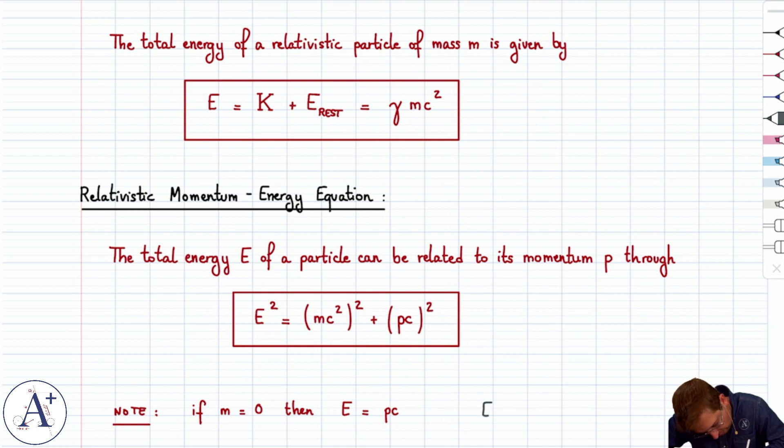By the way, we've already talked about this. Because E equals pc is then, because p is h over lambda, equal to hc over lambda. And we already knew that.